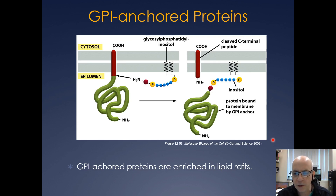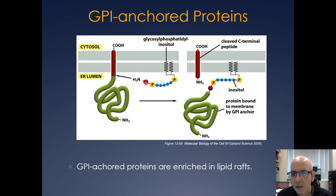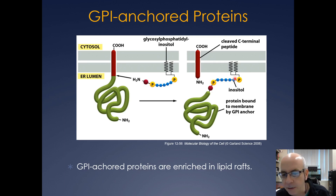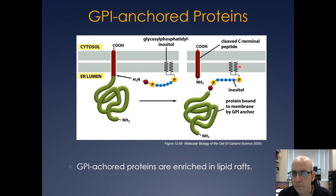GPI anchors — which we discussed earlier as being enriched in lipid rafts — work as follows: a GPI-anchored protein has its signal sequence cleaved and then gets covalently attached to glycosylphosphatidylinositol, a lipid anchor. The GPI-anchored protein is then sorted in the ER, transported to the Golgi in a vesicle where it continues to be glycosylated, and eventually ends up on the extracellular surface of the plasma membrane, embedded or enriched in a lipid raft.